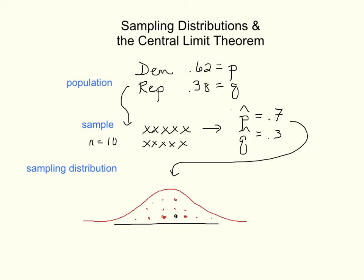That's what the central limit theorem tells us. And the center of all these P-hats, in other words, the mean of all these different P-hats, will be 0.62, the same as the population's P. And the standard deviation, in other words, the spread of all these P-hats, will be a calculation involving P, which is 0.62, Q, which is 0.38, and 10, which is the sample size that we were working with.